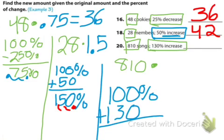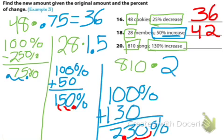So we end up with 230%. Change it to a decimal. Move it twice to the left. So we end up multiplying by 2.3. So 810 times 2.3 gives us 1,863.